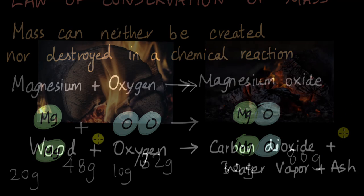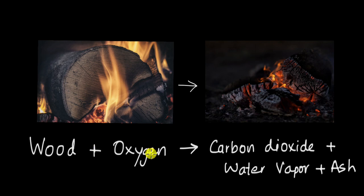Now let's come back to the wood example over here. Wood reacts with oxygen to form carbon dioxide, water vapor, and some ash. If this reaction happens in the open, the gases formed will float in the air.